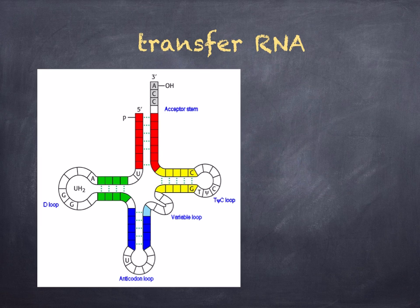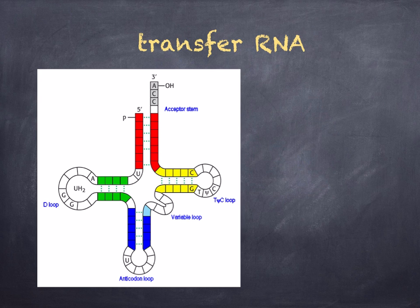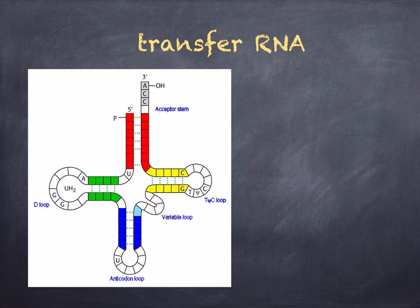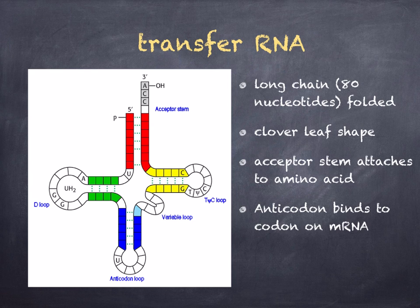Finally, you have transfer RNA. Transfer RNA is a relatively small molecule made up of around 80 nucleotides. It's a single strand that has been folded into a cloverleaf shape. One end of the chain extends beyond the other — this extended chain always has the nitrogenous base sequence cytosine, cytosine, adenine, and this is where amino acids attach. The acceptor stem at the top attaches to amino acids, and the anticodon at the bottom binds to the codon on the mRNA.